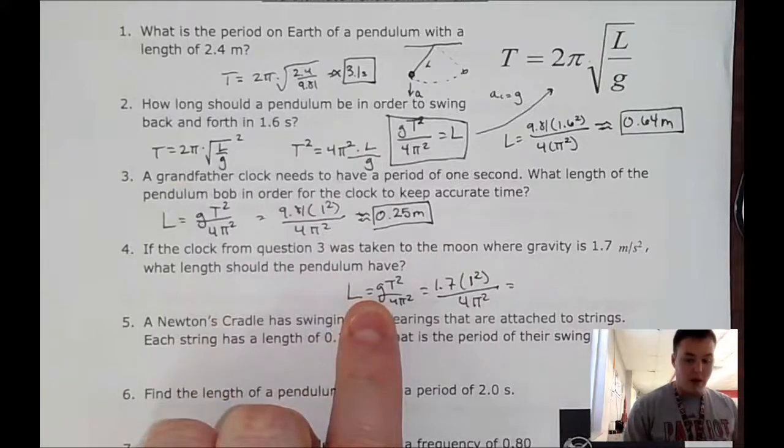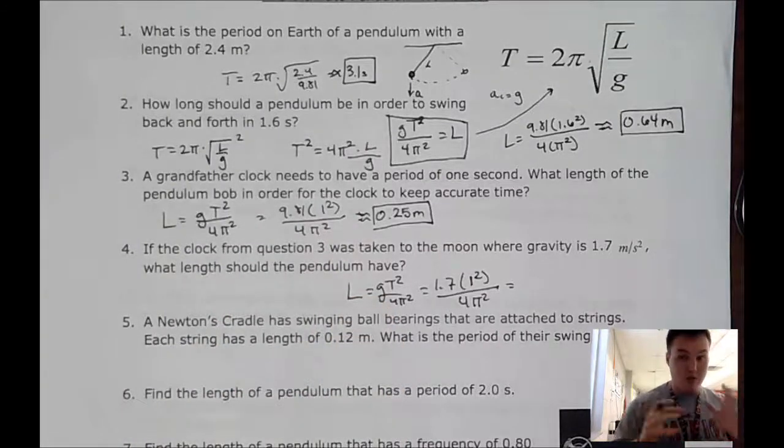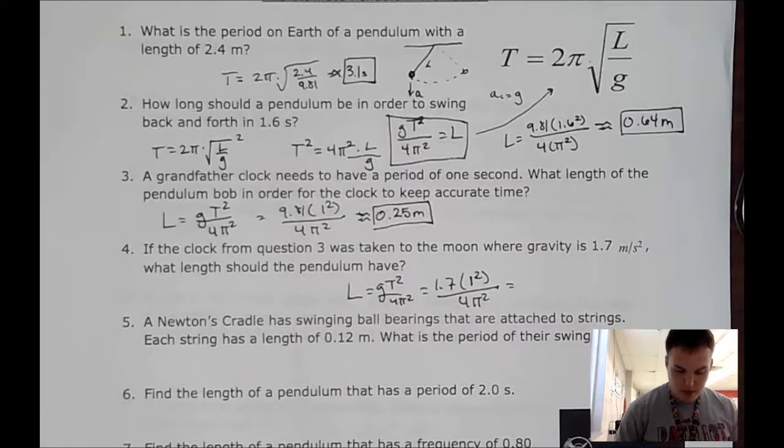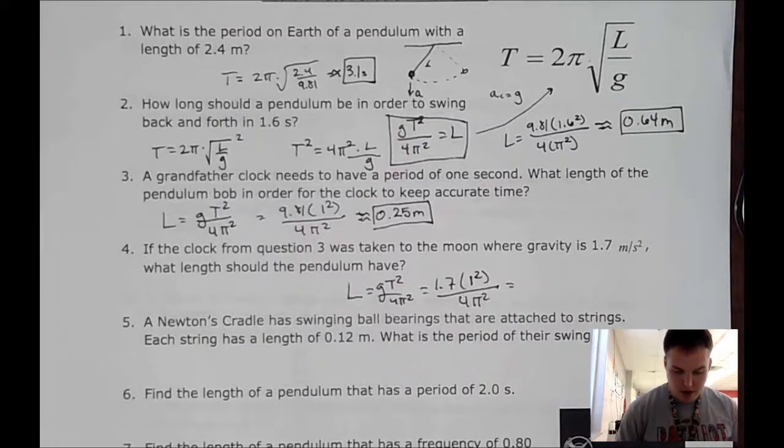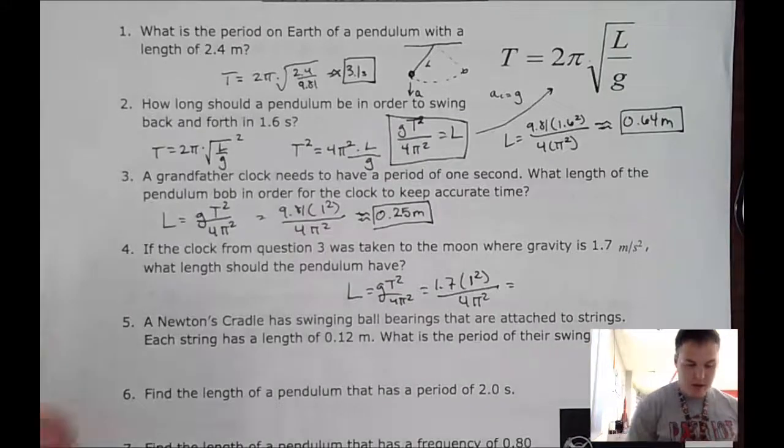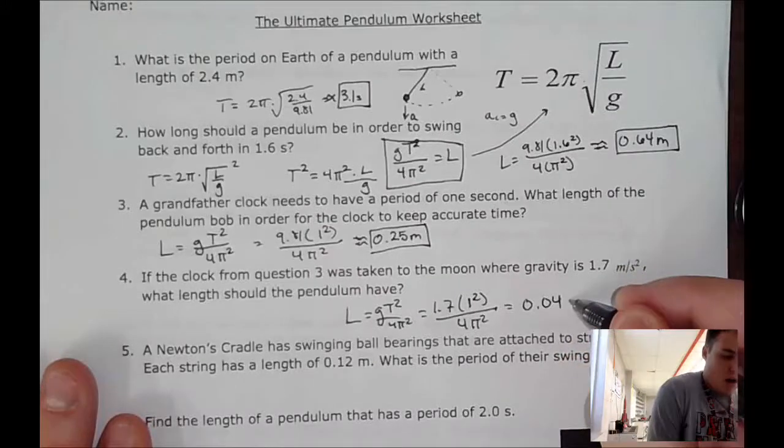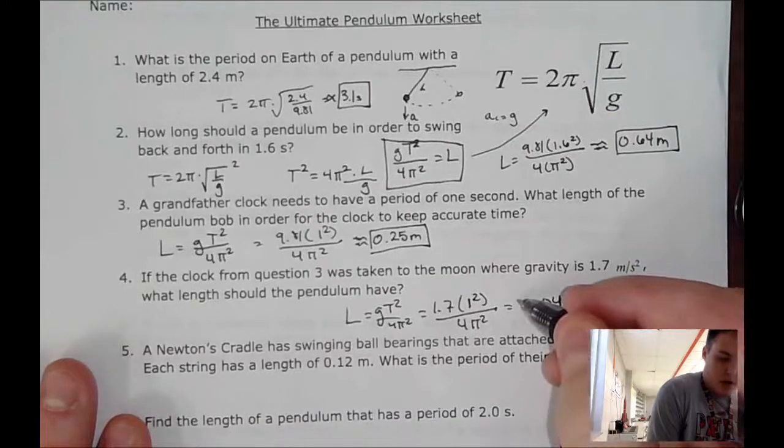So we do 1.7 divided by... So 1.7 divided by 4π². And that gives me a length. It's actually 0.04 meters.